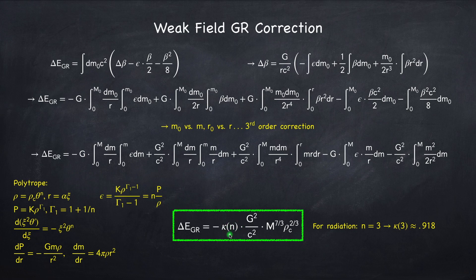The result is expressed in terms of k(n), a numerical factor from the integral over the polytrope profile that depends on the polytrope index n. We pick n = 3, corresponding to a radiation-dominated star — the only case where the post-Newtonian correction is actually relevant. Here m is the total gravitational mass of the star as measured from the gravitational field, and ρ_c is the rest mass density at the center of the star, i.e., the central density.